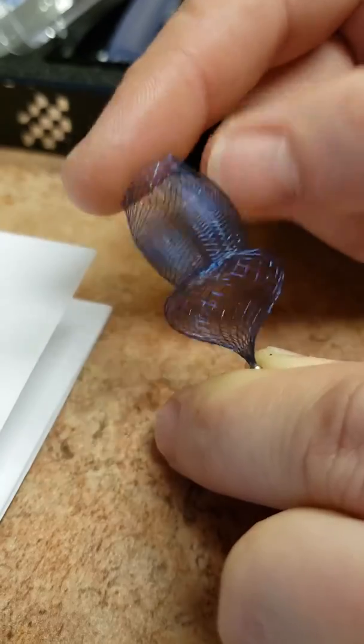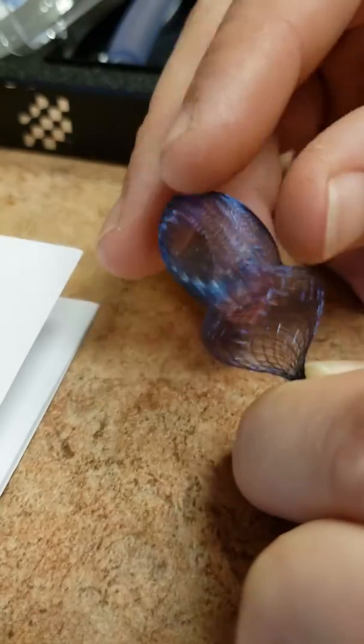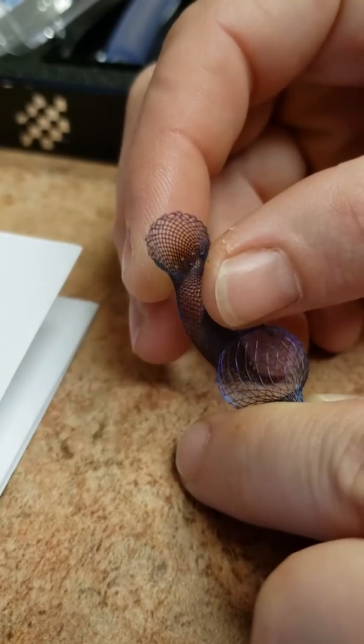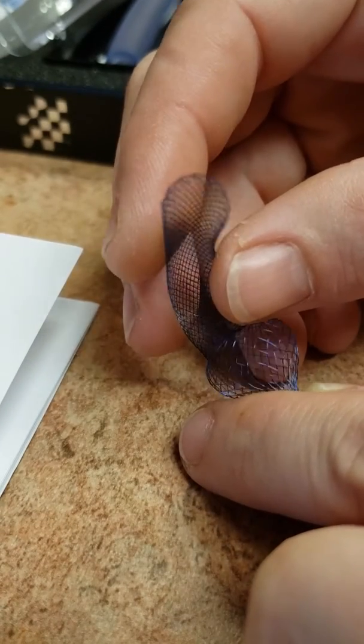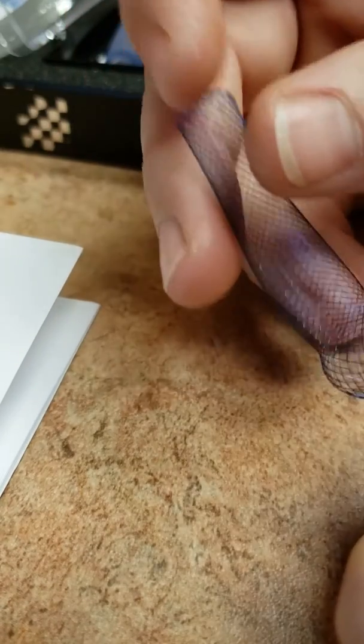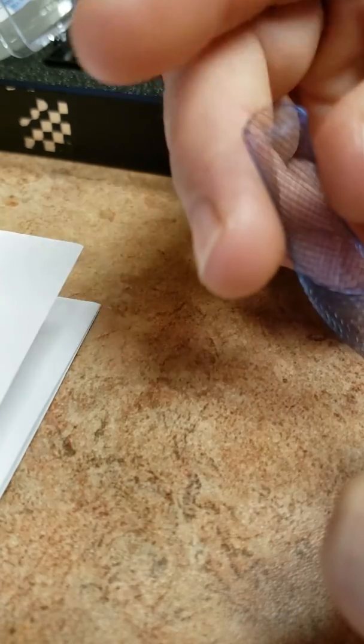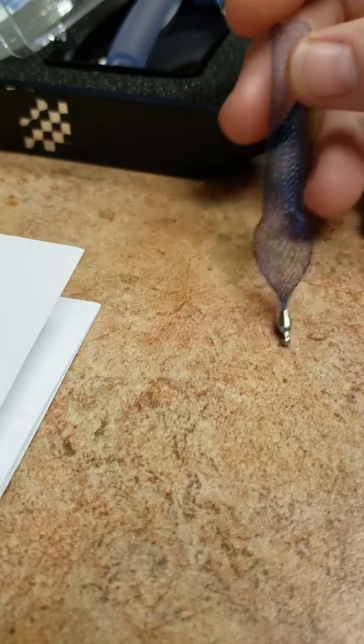So I'll hold it in place here and kind of maneuver it like so to get the stuff out of there as best I can. But do not stick your finger in there, because if you stick your finger in there, just like a Chinese finger trap, you're gonna break the braids trying to pull your finger out.